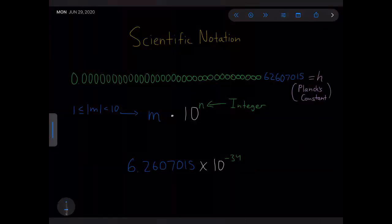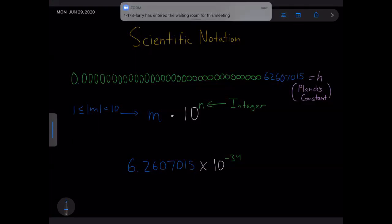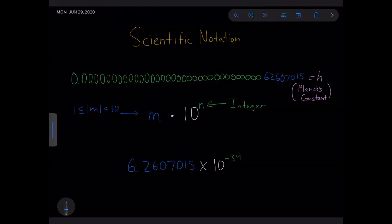Before we go into any real star measuring, we need to develop our notation first. Astronomy deals with both really big and really small numbers. Take for example Planck's constant — it has 33 zeros after the decimal point before 62607015. Obviously writing out this many zeros isn't a good idea, so we use a notation called scientific notation.